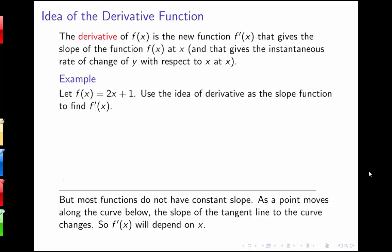In this section I'm going to be talking about the derivative as a function. The derivative of f of x is a new function, f prime of x, that gives the slope of the function f of x at x. Besides giving the slope of a function, the derivative can also tell us the instantaneous rate of change of y with respect to x at some particular value x. While before we looked at the derivative at a particular point, now we're looking at the derivative as a function so that we can find the slope at any value x instead of at just some particular value a.